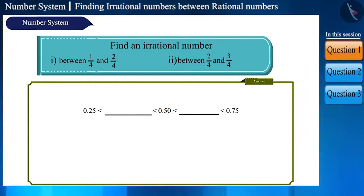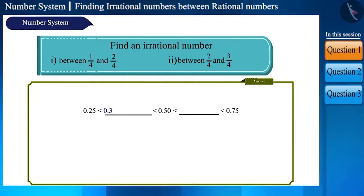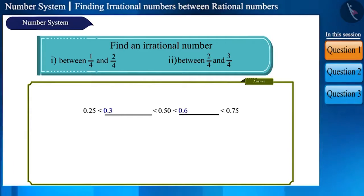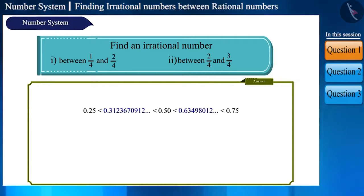This is quite easy. There is a big difference between the two numbers. You can write irrational numbers starting from 0.3 or 0.6 in this manner.